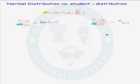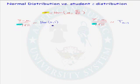So if we are doing a test of significance on the population mean mu, whether or not we know sigma determines whether we are going to use a standard normal distribution or a t distribution with n minus 1 degrees of freedom.